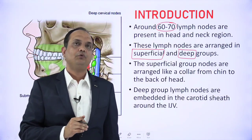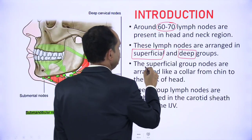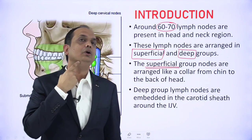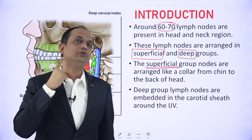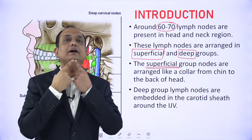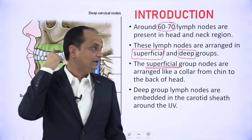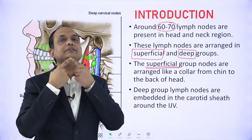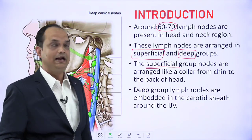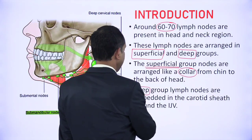The superficial group is present along the lower part of the head at the junction of head and neck. This region extends from the chin, then the base of mandible, mastoid process, and posteriorly it reaches to the occiput. In this region the superficial group is arranged like a collar.